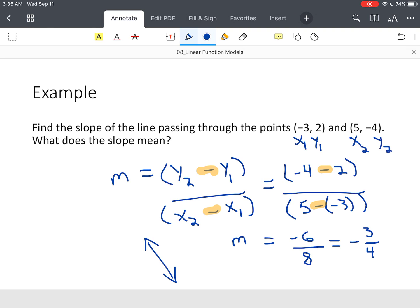So now what does this slope mean? So we've done this part. Alright, this means for every three units that I move down, I move four units to the right.